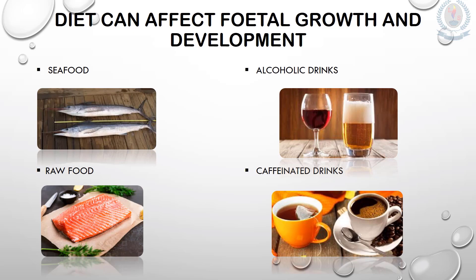Some seafood contains mercury which is toxic and can affect the brain development of the fetus. Raw food such as raw salmon, soft boiled egg, and medium rare steak should also be avoided. Alcoholic drinks such as beer and wine contain alcohol, which is a type of drug that can affect the fetus's brain development, cause the fetus's facial features to be deformed, and can also cause the death of the embryo or fetus.